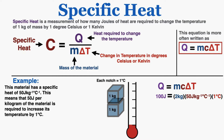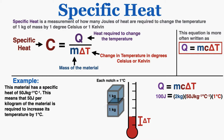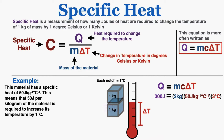Because this is 50 joules per kilogram degree Celsius, if we want to change 2 kilograms by 1 degree, and this material requires 50 joules per kilogram per degree, if we have 2 kilograms, we need 100 joules just to change its temperature by 1 degree Celsius. So in general, with a specific heat of 50 joules per kilogram degree Celsius and 2 kilograms, it requires 100 joules to change this material by 1 degree Celsius, so if we were to add 300 joules, that would only change the temperature by 3 degrees Celsius.